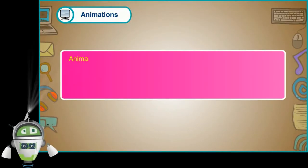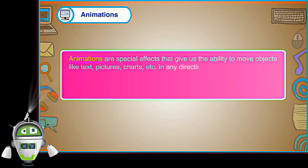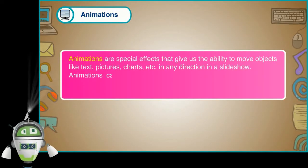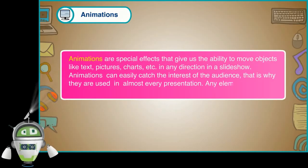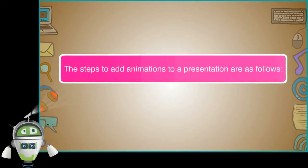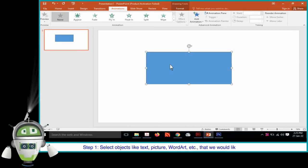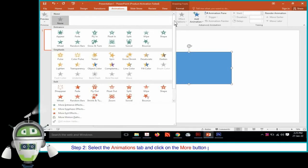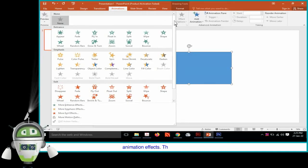Animations are special effects that give us the ability to move objects like text, pictures, charts, etc. in any direction in a slideshow. Animations can easily catch the interest of the audience, which is why they are used in almost every presentation. Any element of a slide can be animated. The steps to add animations to a presentation are as follows. Step 1: Select objects like text, picture, or word art that we would like to animate. Step 2: Select the Animations tab and click on the More button present in the Animation group. Step 3: A drop-down gallery will appear with four different kinds of animation effects.